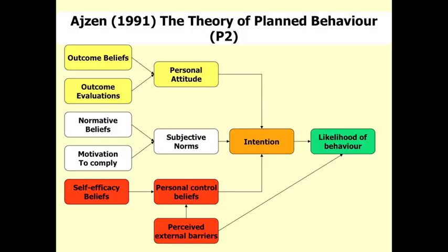We're going to have a look at Ajzen's Theory of Planned Behaviour model from 1991. I'm going to explain each section and relate it to health promotion campaigns. This picture shows the whole model and I'm going to break it down, looking at each section, each different colour.